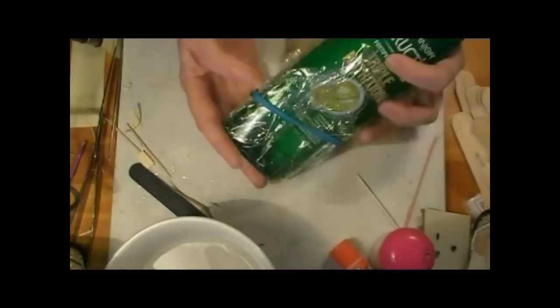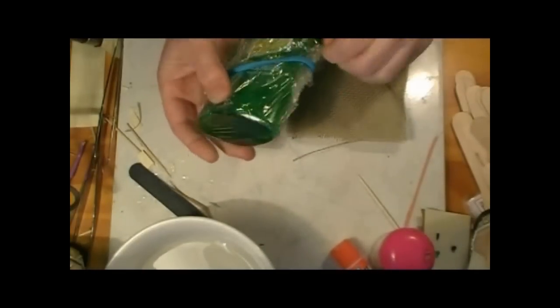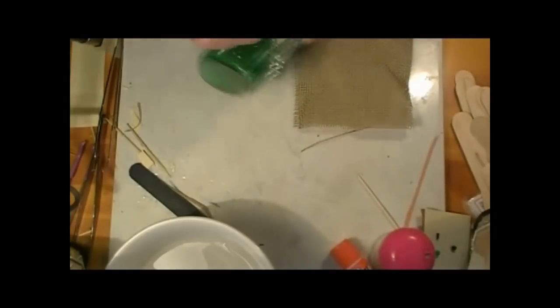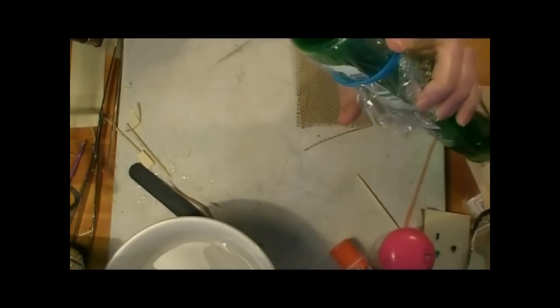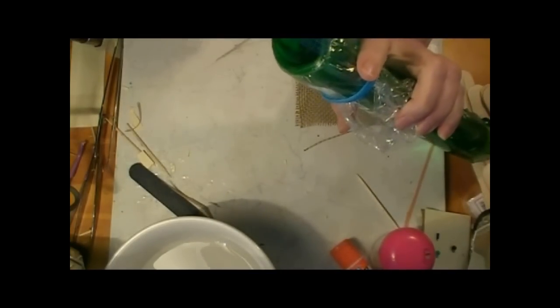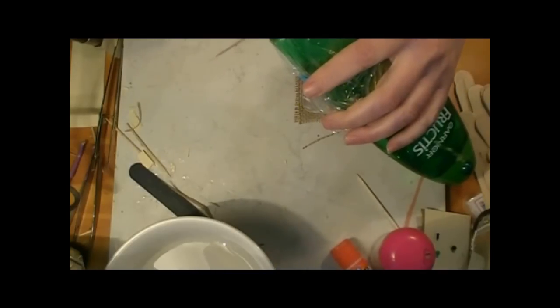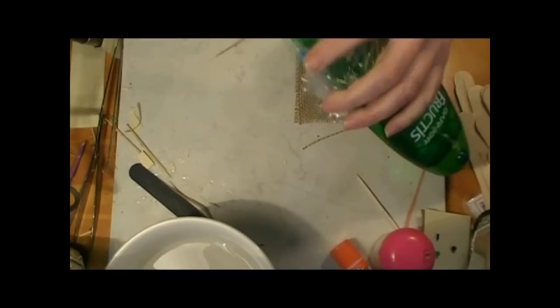The first step in making our little Moses basket for our baby doll is to find a suitable mold. I'm using a shampoo bottle. You want something that's about 3 inches the long way and about an inch and a half across.